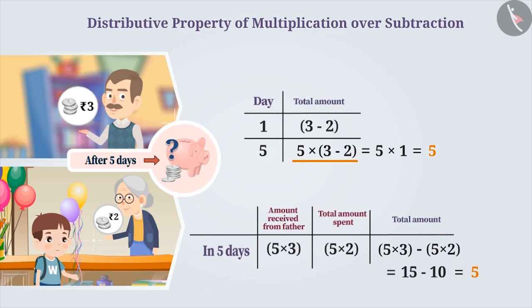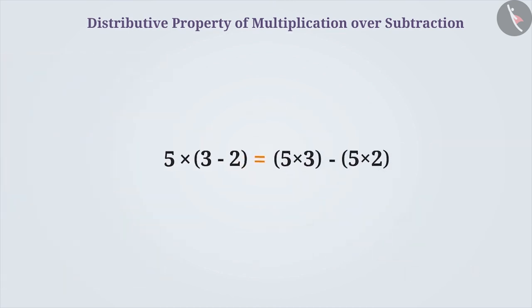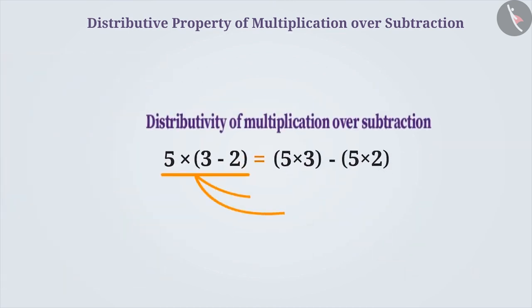Here, 5 into 3 minus 2 is equal to 5 into 3 minus 5 into 2. Therefore, multiplication can also be distributed over subtraction.